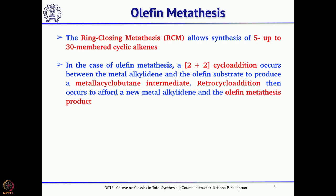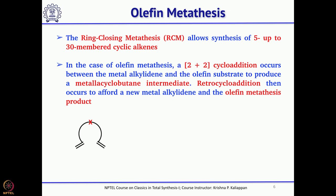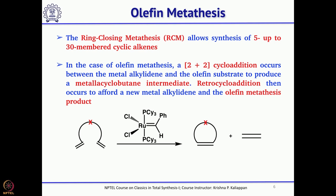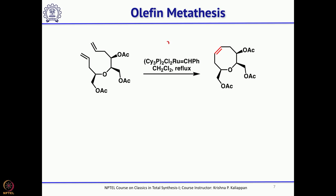Metathesis is a well-known reaction for the last three decades. One can make 5-membered to 30-membered cyclic compounds. Using Grubbs 1st or 2nd generation catalysts — now there are many catalysts — one can convert a diene into an alkene. For example, an 8-membered ring has been formed with the help of Grubbs 1st generation catalyst, and another difficult 8-membered ring is also formed through Grubbs first generation catalyst.